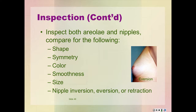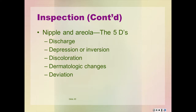Most nipples are everted, but one or both nipples may be inverted with the nipple tucked inward. Ask whether there is a lifetime history of inversion. Recent unilateral inversion of a previously everted nipple suggests malignancy. See the figures on page 465 of your text. The 5 Ds related to nipples — a good mnemonic — are discharge, depression, discoloration, dermatologic changes, and deviation.